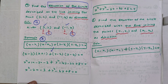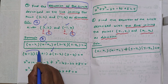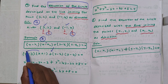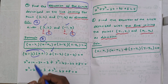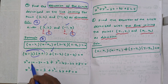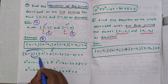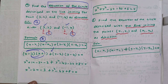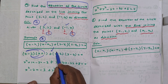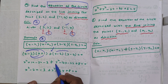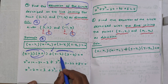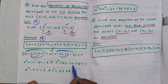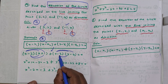We multiply out: x into x is x squared, x into 1 is x, minus 3 into x is minus 3x, minus 3 into 1 is minus 3.